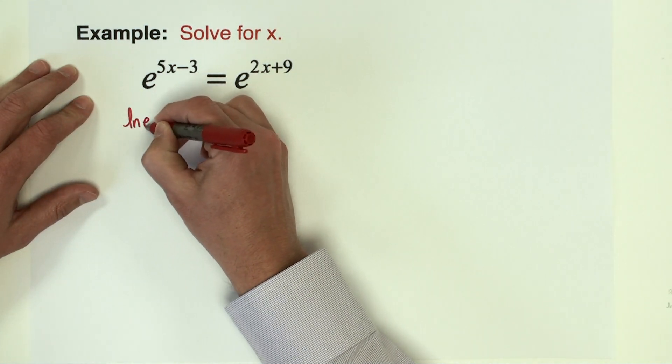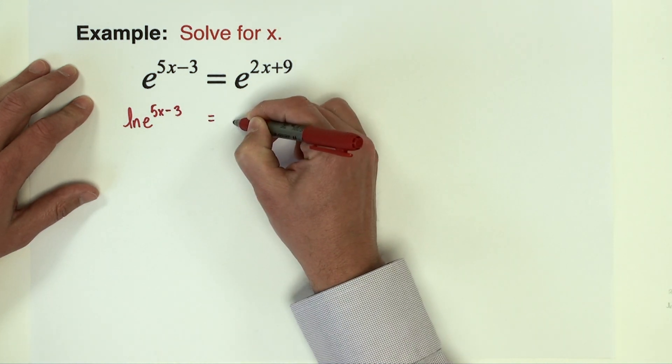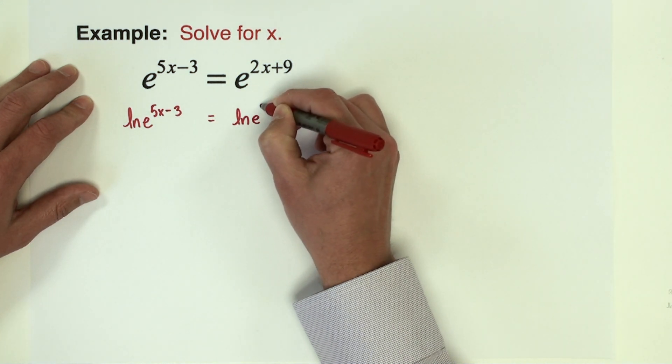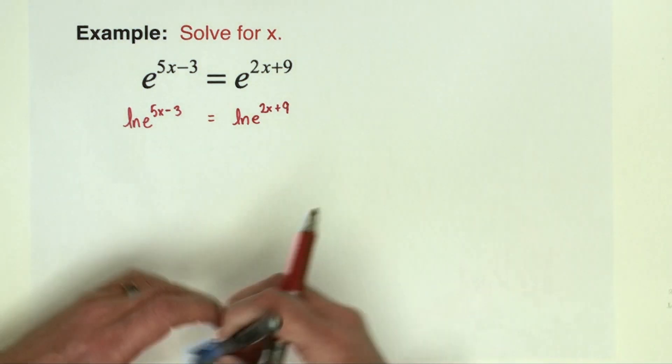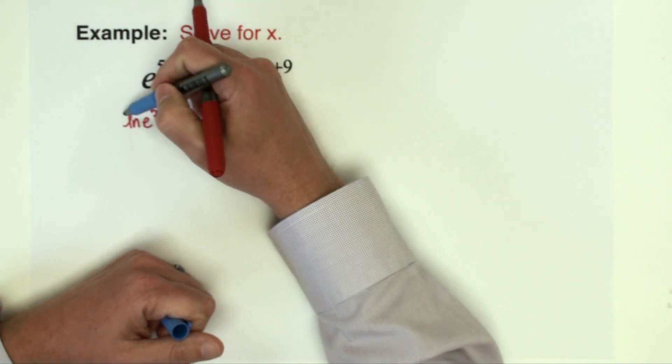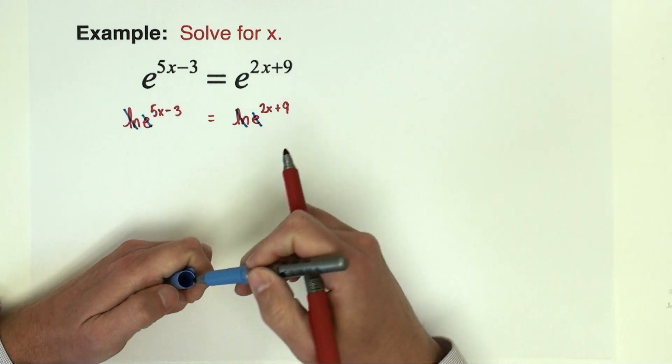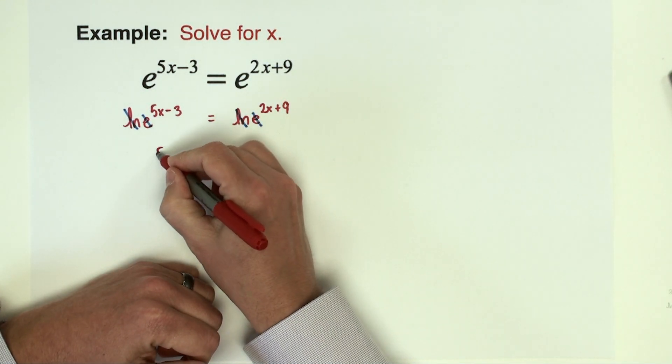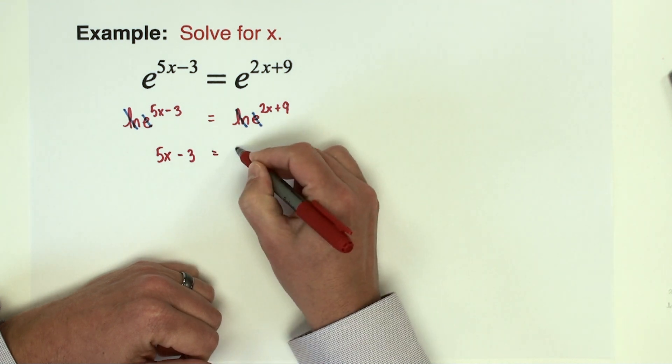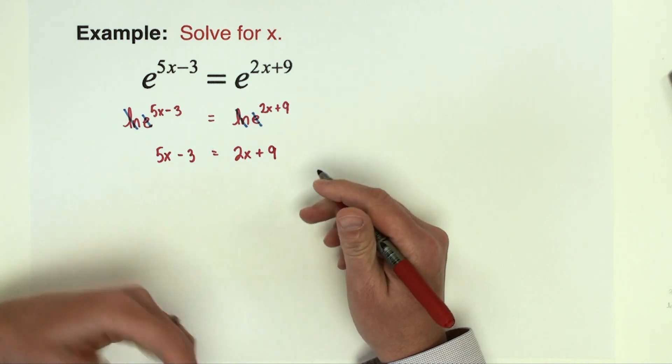So natural log of e^(5x-3) equals natural log of e^(2x+9). Now again, like we saw in the last video, natural log of e are inverses, so they cancel each other out. And that leaves us with 5x - 3 equals 2x + 9, and now we're just going to solve this multi-step linear equation.